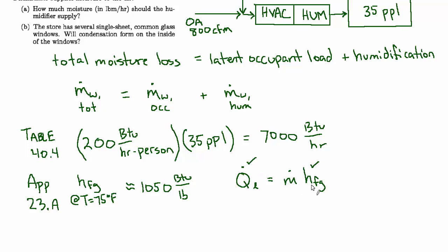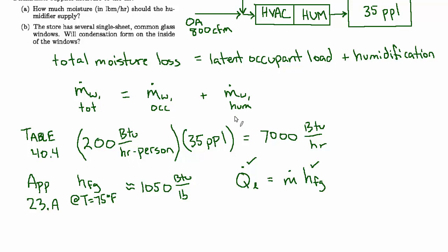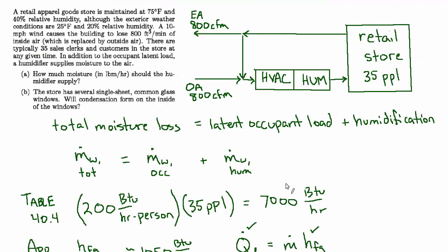And now I'm going to come back to using these subscripts for clarity. This ṁ is actually the mass flow rate of water vapor produced by occupants—the latent occupant load. ṁ_w for the occupants equals 7,000 BTU per hour divided by 1050 BTU per pound, which is 6.67 pounds per hour. So we just found this number.